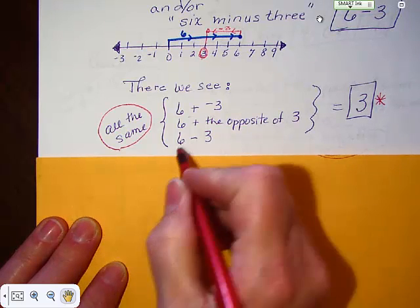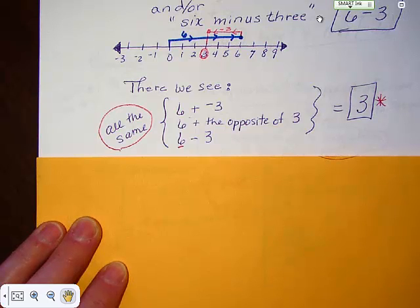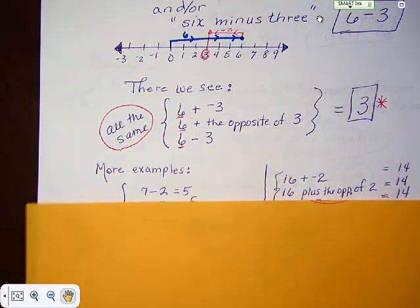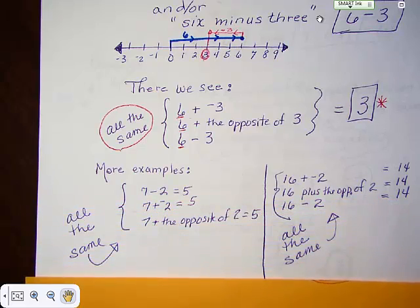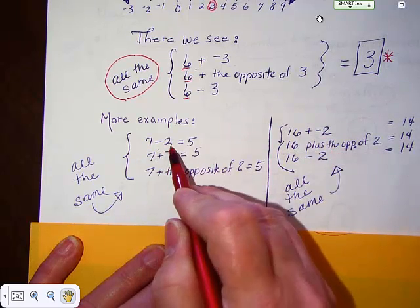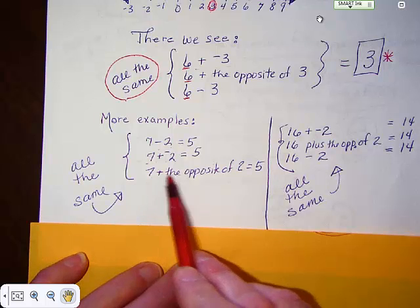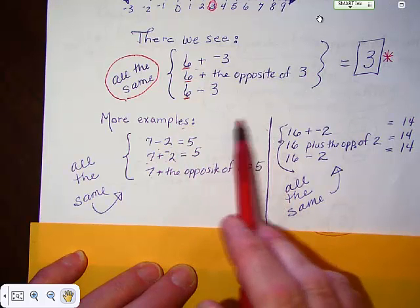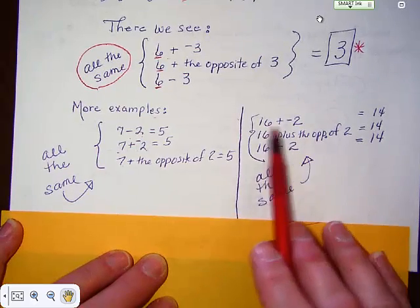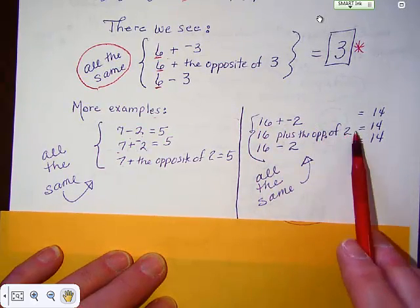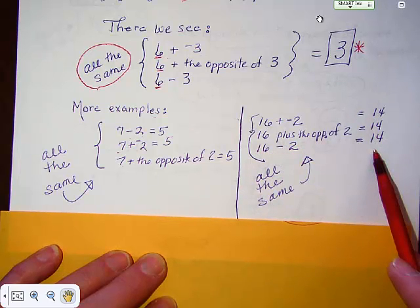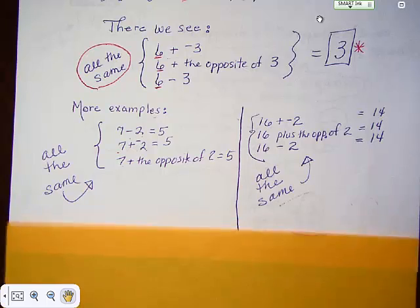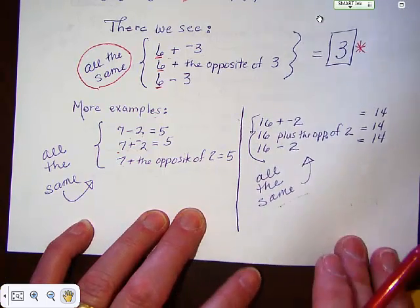Notice the answer is a positive 3 because the 6 is positive — it's the 3 that is opposite. Here are a few more examples. We have 7 minus 2, which equals 7 plus the opposite of 2. They all equal 5. If you go 7 to the right on the number line and go back 2, you get 5. Here's another: 16 plus the opposite of 2 equals 16 subtract 2, which equals 14. You go right 16, back 2, and end up at 14.